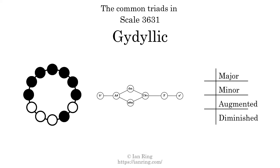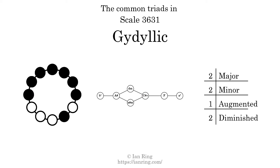Here are the common triads present in this scale. The diagram in the center is a graph of parsimonious voice leading between triads. There are two major triads, two minor triads, one augmented triad, and two diminished triads. There is no Hamiltonian path through the graph that uses all the triads.